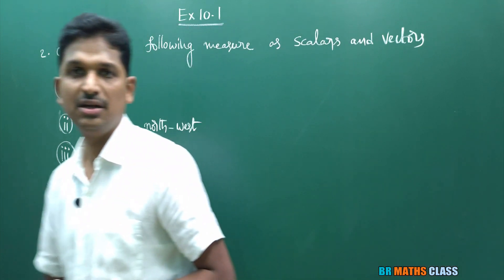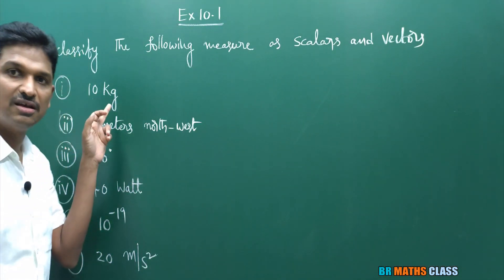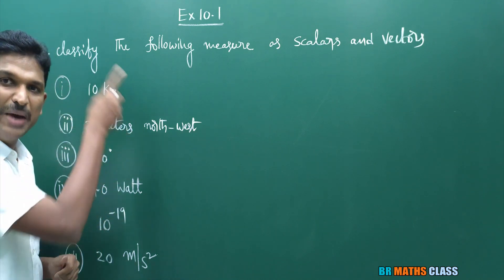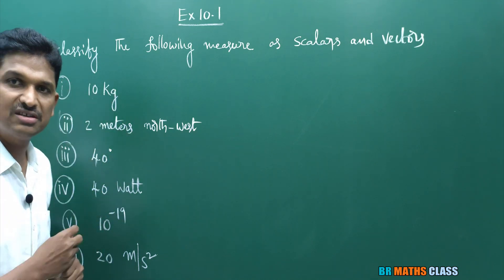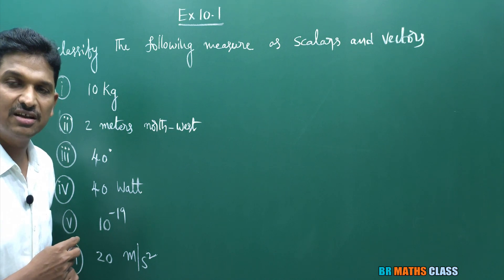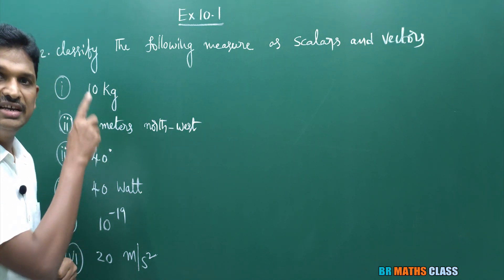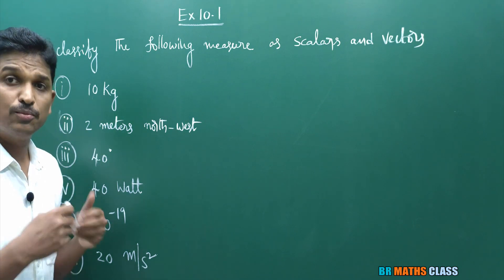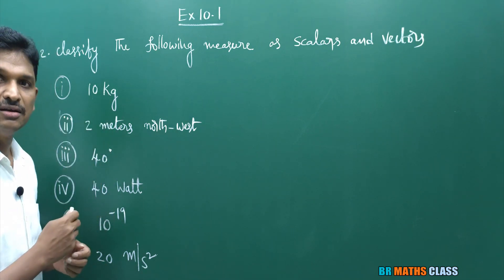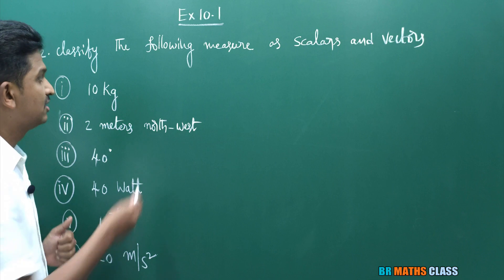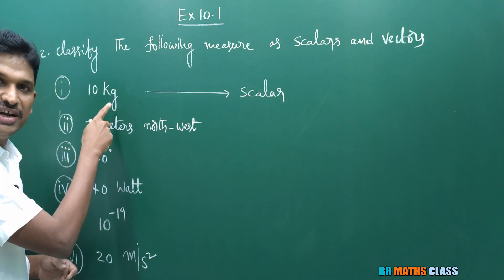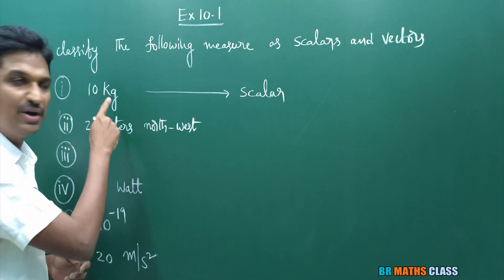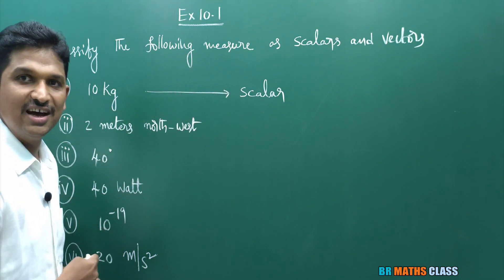Observe the first one: 10 kg. Magnitude is 10, and there is no direction. Moreover, it is mass, and mass is a scalar. So this is a physical quantity having only magnitude but no direction — that is why it is a scalar.